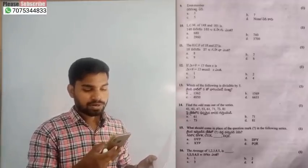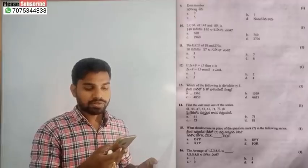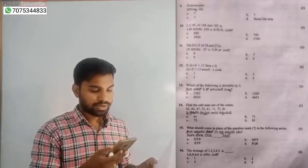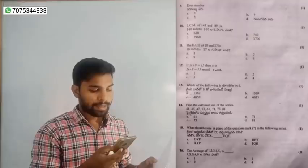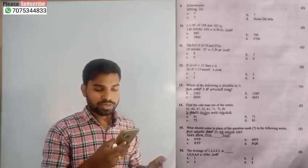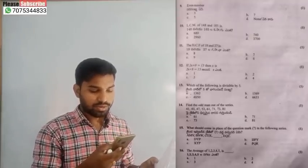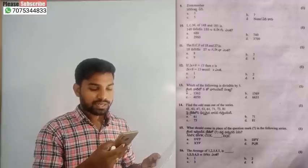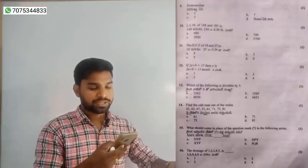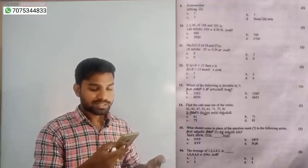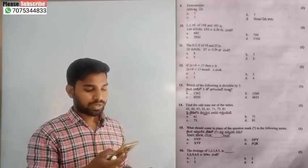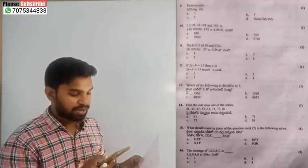Question number 14: find the odd man out — 81 is the middle one among prime numbers, so 81 is the correct answer. Question number 15: what would come in the place of the question mark? Find the series — ABC order, increasing one by one — the answer is option B, DPY.